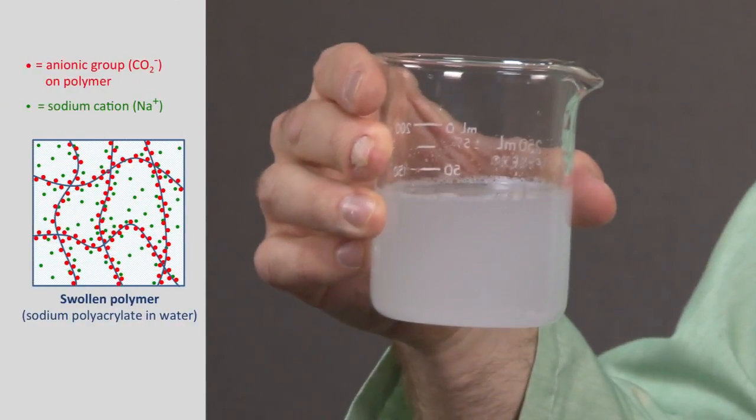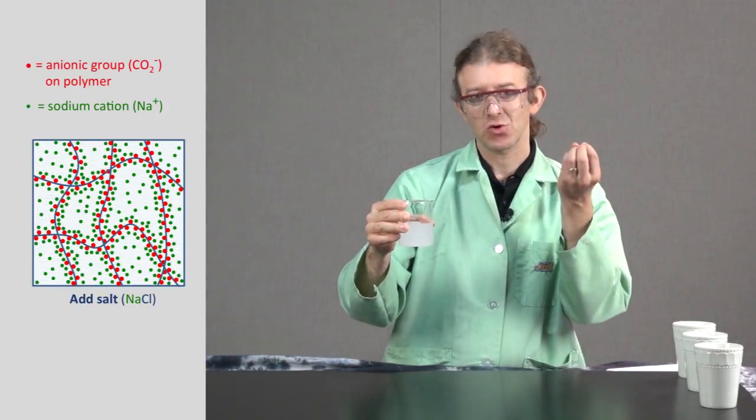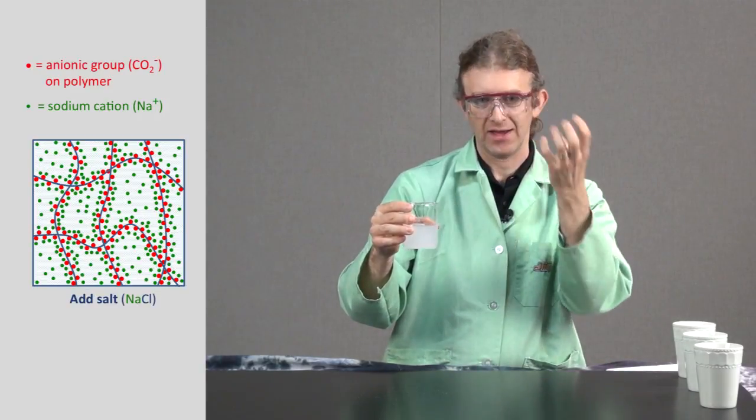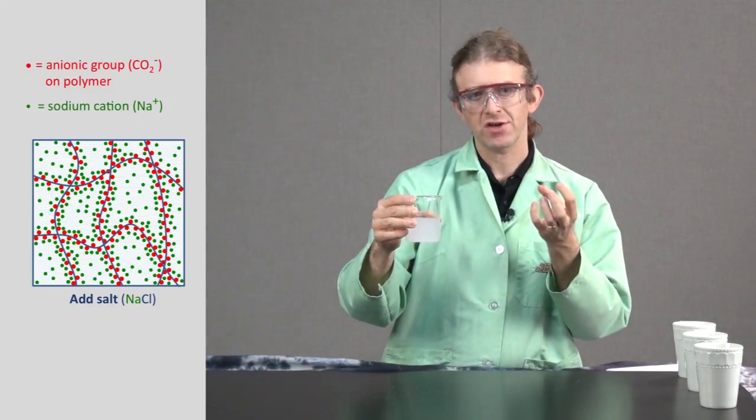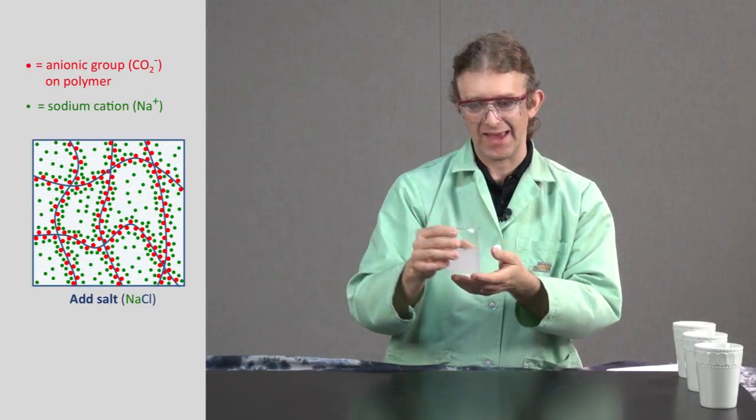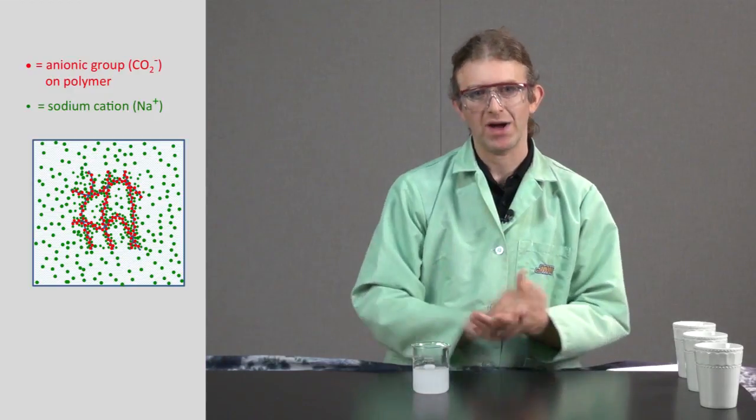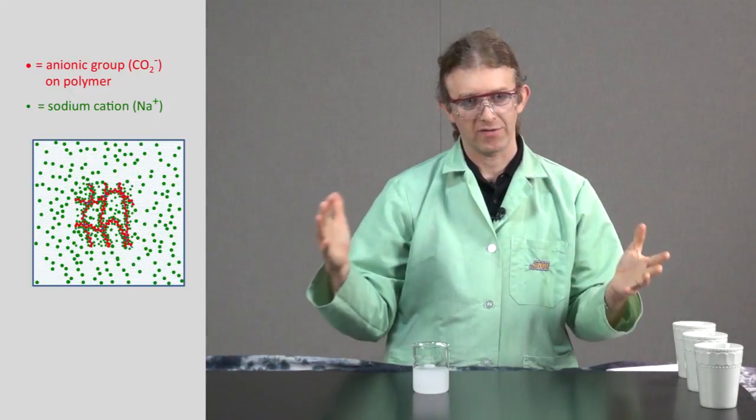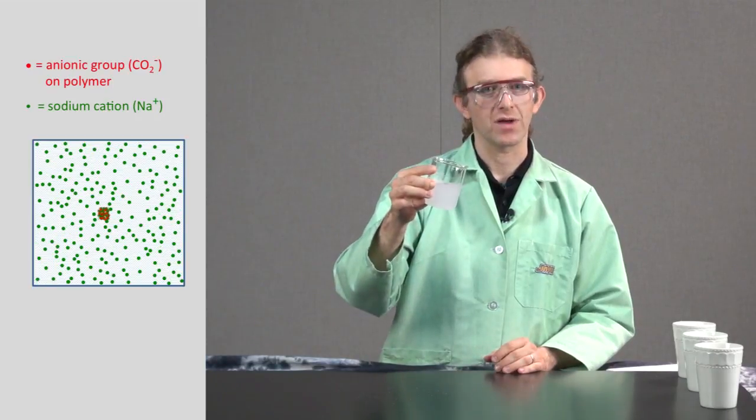And the way this works is the sodium cations from that salt end up surrounding the anionic components of the polymer. And so it shields those negative charges. So those negative charges are less apparent and it decreases that anionic-anionic repulsion that we see between the polymer chains. So the polymer is no longer swelled and we've essentially reversed the process to get to a free-flowing system again.